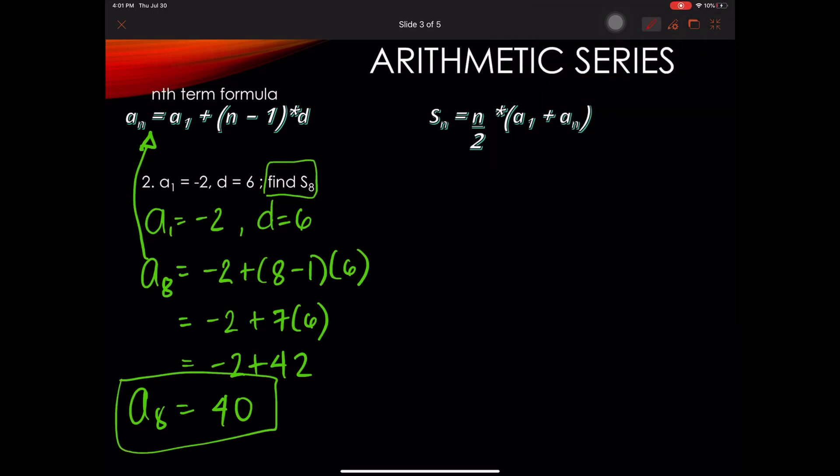So if the 8th term is equal to 40, now we can get the sum of the first 8 terms applying the formula. So substituting our given, 8 over 2, times the first term, which is negative 2, plus the 8th term, or the last term, which is 40,